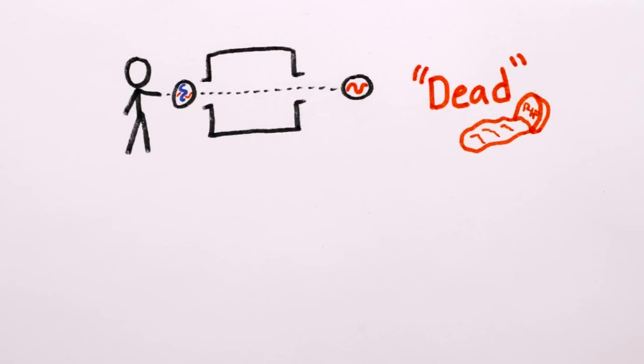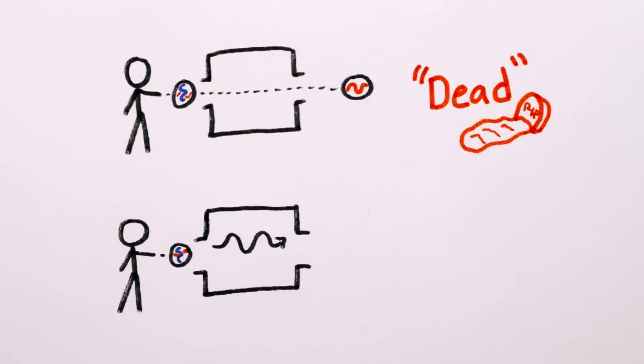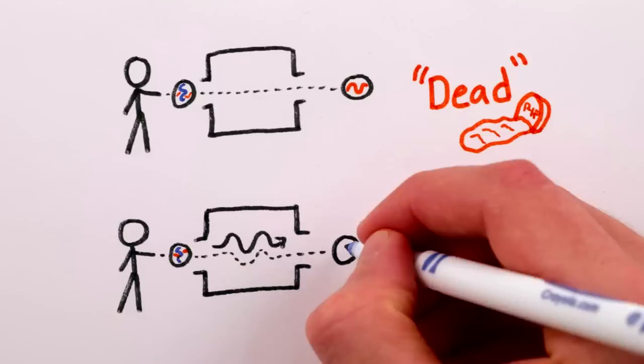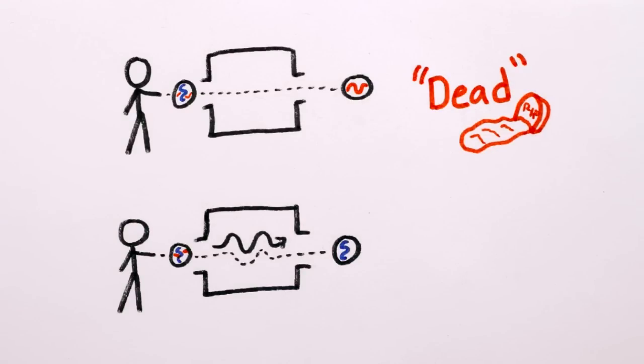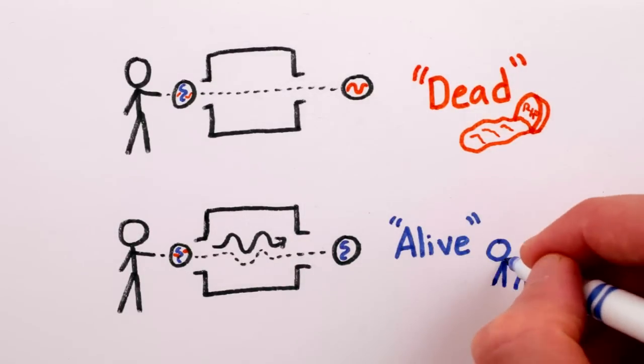But if there is a photon in there, and we carefully send the atom through so it doesn't actually destroy the photon, the atom-photon interactions change the odds, so now it's an overwhelming chance that we see that atom as alive.